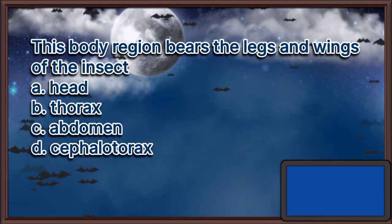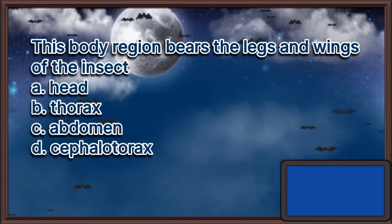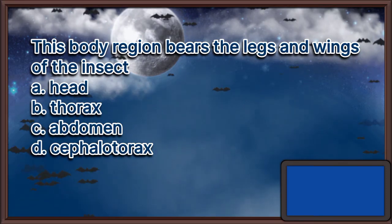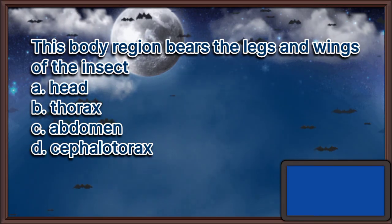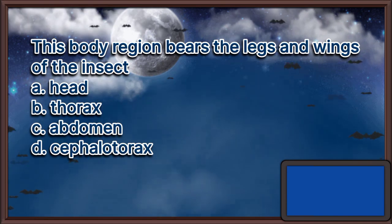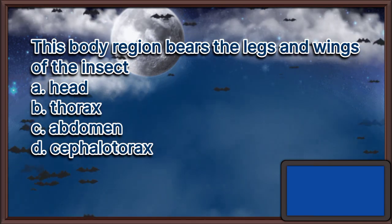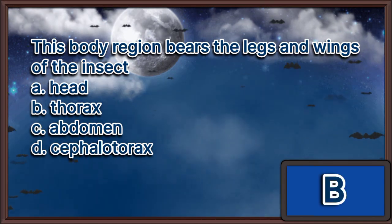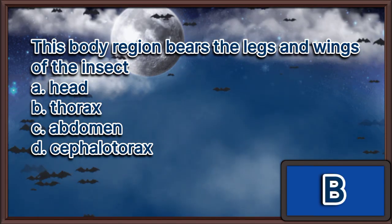This body region bears the legs and wings of the insect. A. Head. B. Thorax. C. Abdomen. D. Cephalothorax. The answer is letter B.